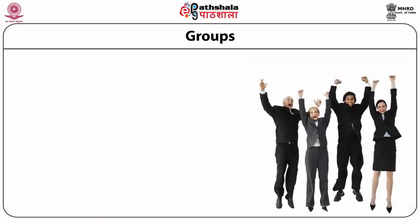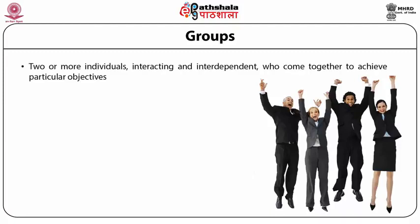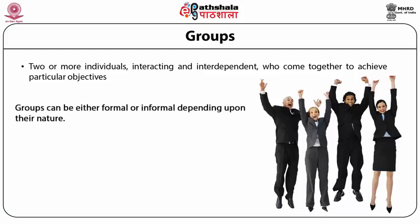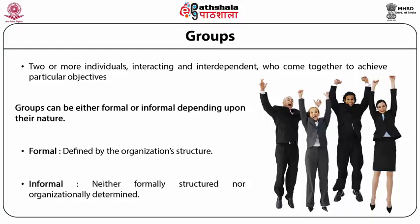Now you know what groups are. These are basically two or more individuals interacting with each other, who are interdependent on each other, and who come together to achieve particular objectives. Groups may be formal or informal. Formal groups are the ones defined by the organization's structure, while informal groups are neither formally structured nor organizationally determined.